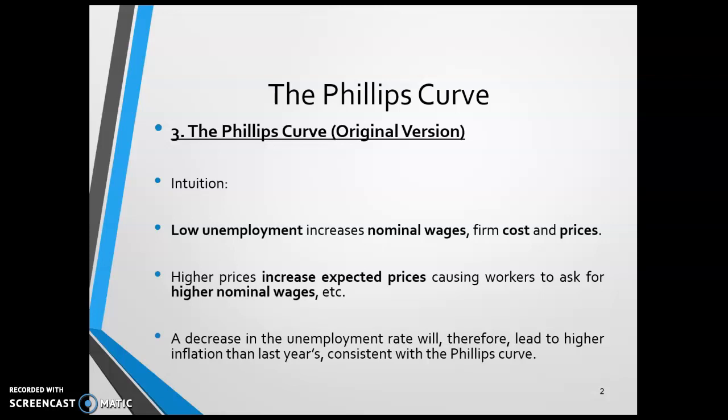This drives firm costs up and prices. For instance, if the aggregate demand curve shifts to the right, you see an initial increase in prices. We've been over that a couple of times, but you should review it if you don't remember. As prices increase, expected prices increase as well, which causes the aggregate supply curve to shift to the left. That brings us closer to the natural level of output.